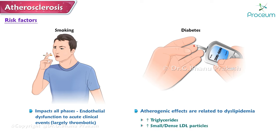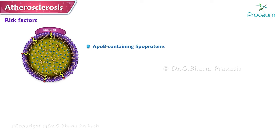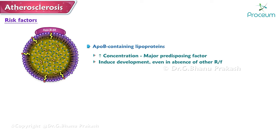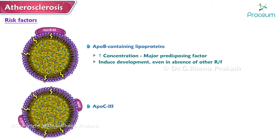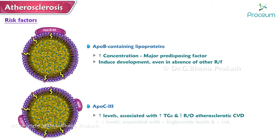Atherogenic effects from diabetes include elevated triglycerides, small dense LDL particles, and low levels of HDL cholesterol. Elevated concentrations of ApoB-containing lipoproteins are a major predisposing factor to atherosclerosis, capable of inducing its development even in the absence of other risk factors. Elevated levels of ApoC3 are associated with increased triglyceride levels and increased risk of atherosclerotic cardiovascular disease, while lower ApoC3 levels are associated with lower triglycerides and reduced risk.